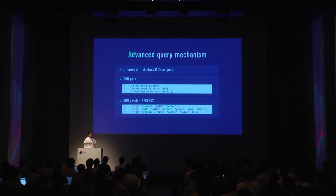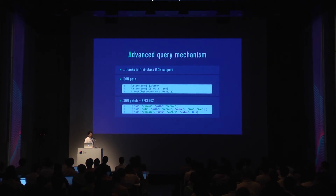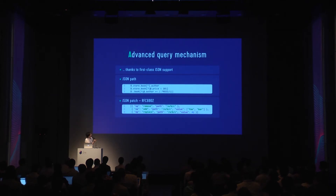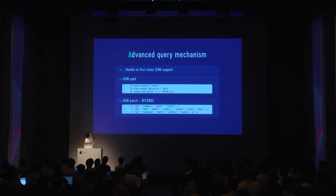If you store your settings in JSON, Central Dogma provides more advanced query mechanisms than plain text files. For instance, you can use JSON Path to select a specific part of a JSON file very easily. The first expression selects the author of all books; the second expression selects all books whose price is less than $10; and the third one does regular expression matching, which is more advanced than the first two examples. You can do even more advanced queries if you research JSON Path later.